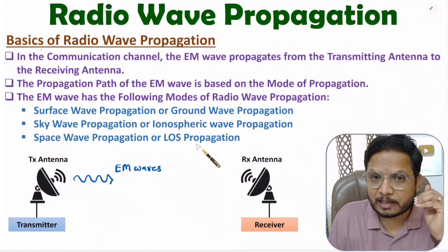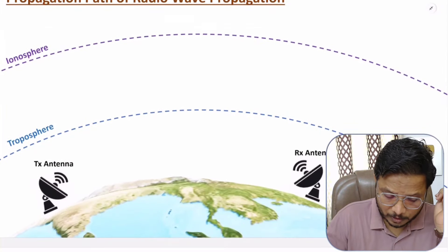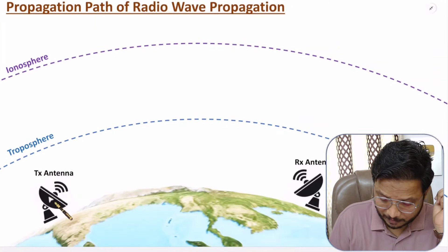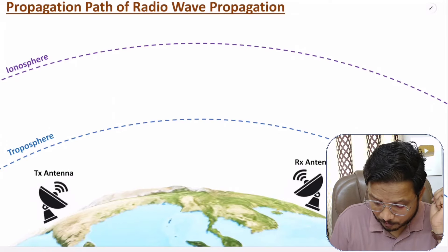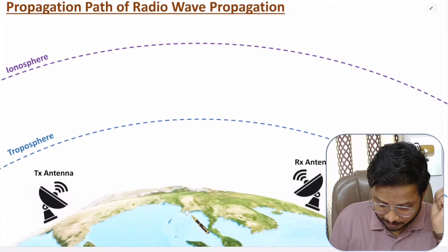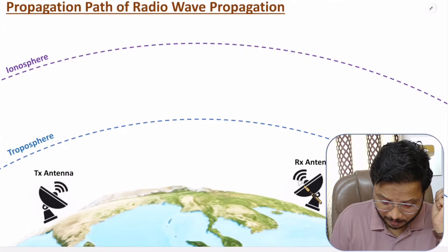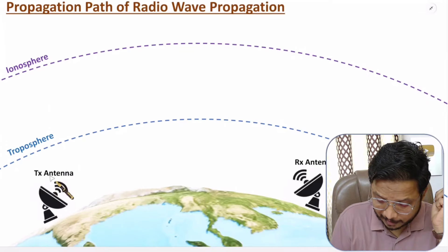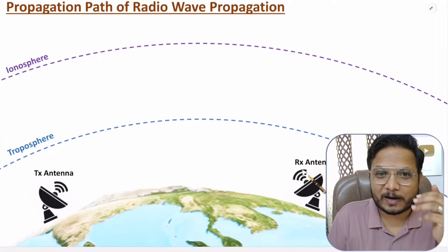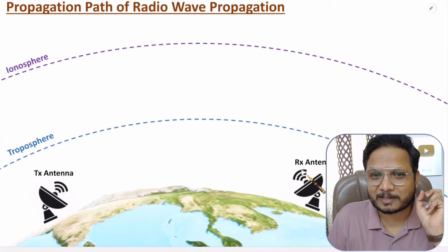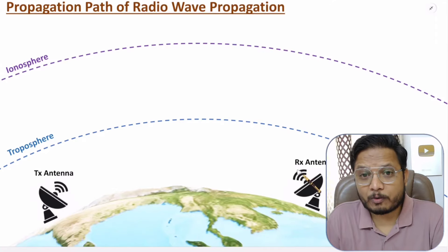Now I'll explain how exactly radio waves are propagated by these three different modes. Here you can observe we have a transmitting antenna and a receiving antenna situated at a long distance. This is the curvature of the earth. We have placed two antennas — one at Pakistan and one at China. At Pakistan we have the transmitting antenna and at China the receiving antenna, as Pakistan and China are good friends communicating via these two antennas.